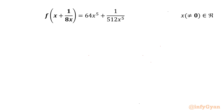Welcome back to Infigyan, my dear friends. In this video we are going to solve one very interesting and challenging functional equation for the value of f(x). The given equation is f(x + 1/8x) = 64x⁵ + 1/512x⁵. f(x) is mapped from real to real, and x cannot be 0. Let us use the method of substitution.